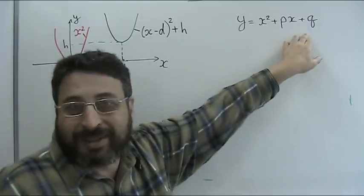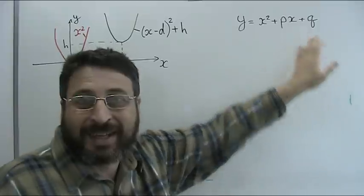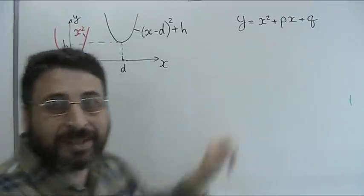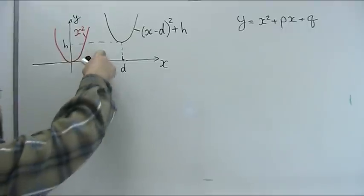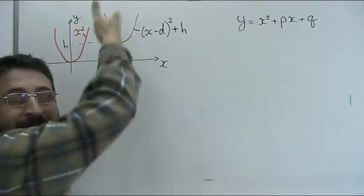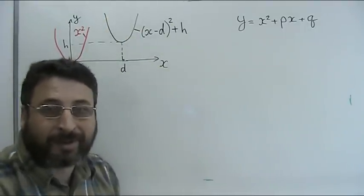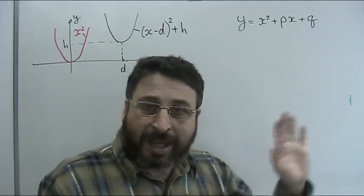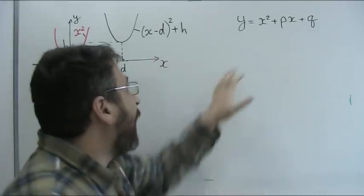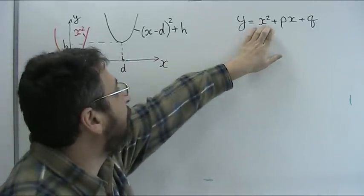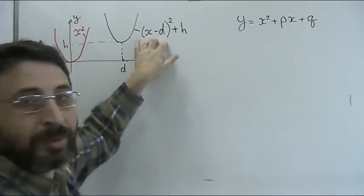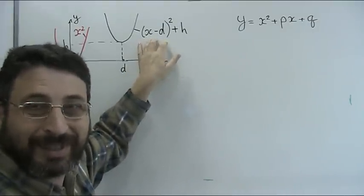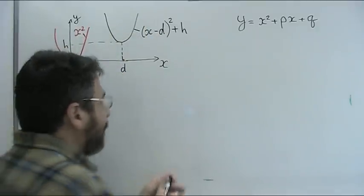How would I build graph of this function? I could take various points x, compute y and put points on the plane (x,y) and connect them with a curve. And this will be my graph. But I can act in a different way. I can ask whether can I convert this form into this which is convenient for building plot. Let's do it.